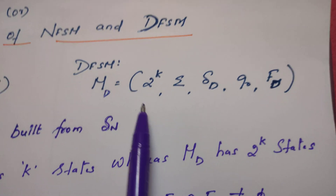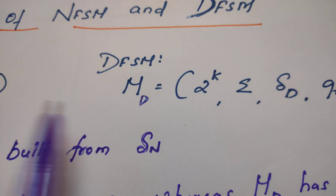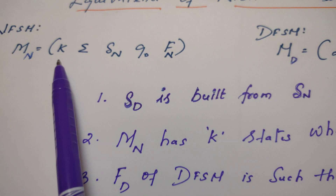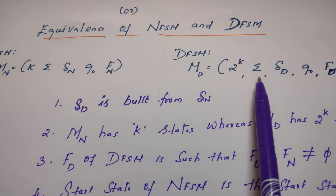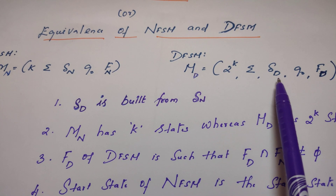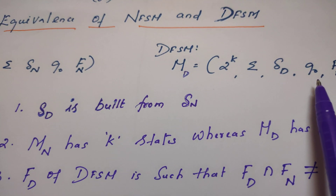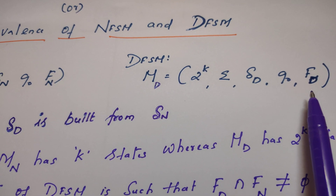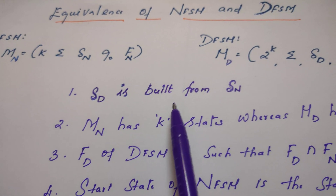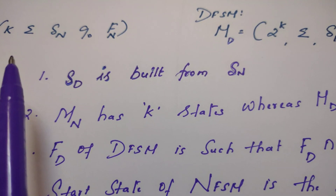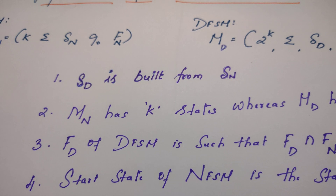DFSM is also given. DFSM, I call it as MD — D indicates DFSM. If there are K states in NFSM, DFSM must have 2 to the power of K states. Then sigma is the alphabet. The transition function of DFSM is given as del D. Q0 is the start state. FD is nothing but the set of final or accepting states of DFSM. I have given the steps here on how to convert NFSM into DFSM, which we will review a little later.